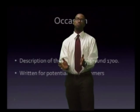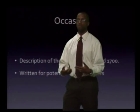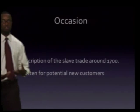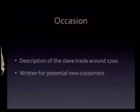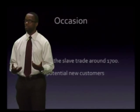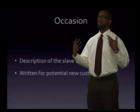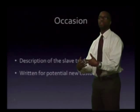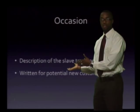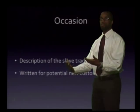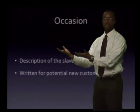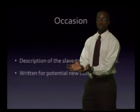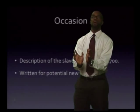We have the first S, which was speaker. Now let's talk about the occasion. By this time you've read the rest of the document. The occasion is a description of the slave trade around 1700 — Bosman is writing about the slave trade around 1700. And this is written for potential new customers. He's writing to let people know this is the way that the Dutch do business in Africa with the slave trade, and perhaps letting future sea captains who participate in the slave trade for the Netherlands know how to do things.